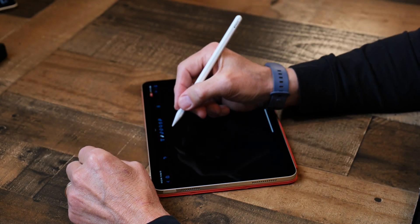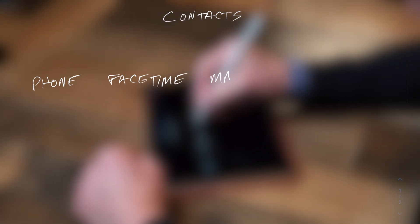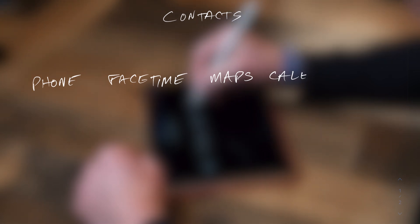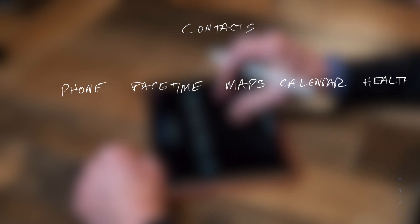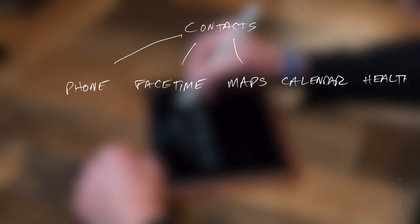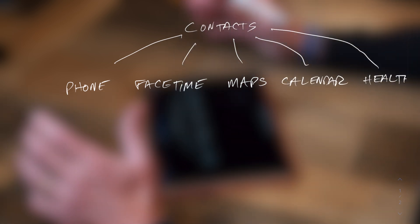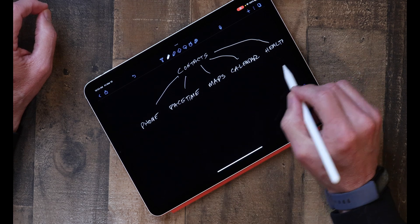When you create a contact in Apple Contacts, you're actually creating an entry in a database. That database connects to a whole bunch of different apps — your phone, FaceTime, Maps, your Calendar, and even the Health app. Contacts is kind of unique because it connects to all of those things, unlike most other apps.